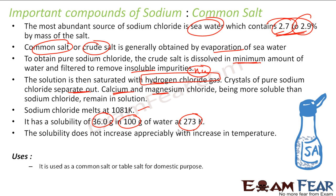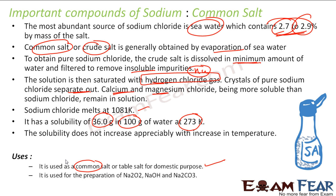The uses of sodium chloride: the most common use is as table salt in the kitchen — that is why it is called common salt. It is also used for the preparation of Na2O2, NaOH, and Na2CO3. Common salt is historically significant too — it was at the center of the freedom movement of India, where Gandhiji led a Satyagraha movement and the salt law was broken by preparing salt at the Dandi march.